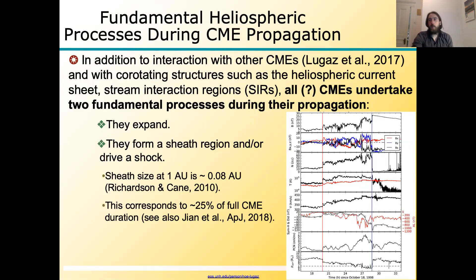When CMEs reach 1 AU, the typical sheath size is about 0.08 AU, which is about 25% of the CME duration.